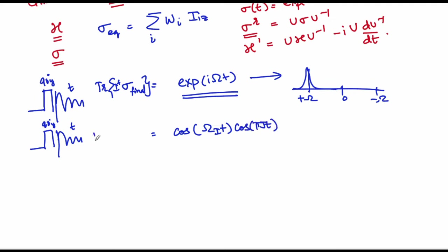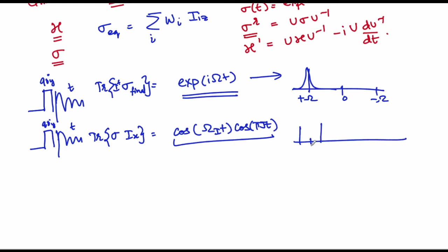In this case, the trace of the density matrix with Ix gives a resonance at Ωᵢ ± πJ, therefore giving a 2πJ difference. If you are having an Ωs, it also has a similar type of spectrum that you end up getting.